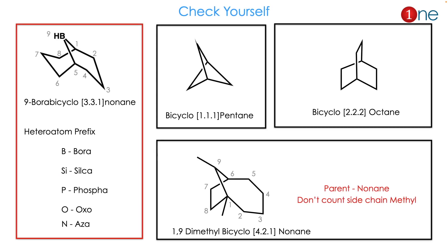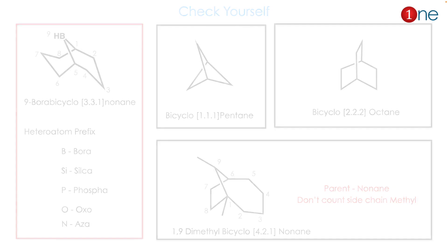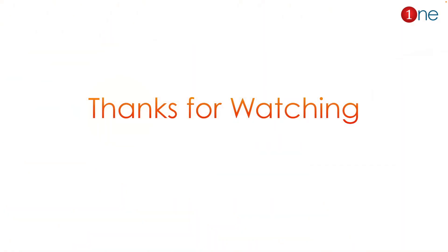Here I have given some examples for you to check yourself. Sometimes a heteroatom can also appear — for example a boron heterocycle. If a heteroatom comes, you count the heteroatom as a carbon, then count the total ring. Heteroatom prefixes include bora, sila, phospha, oxa, and so on. An important fact: the side chain should not be counted as the parent carbon — it is merely a side chain.